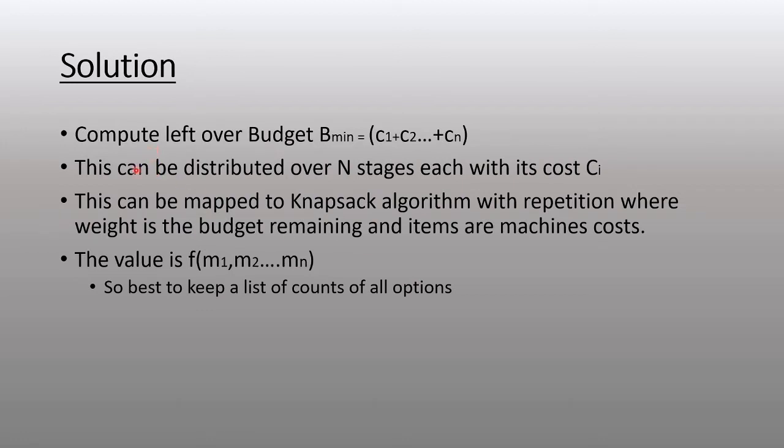Now let's sketch the solution. First, we realize that the minimum budget required is c1 plus c2 plus cn, because you need one copy of the machine at each stage to even operate the system.